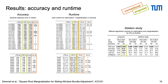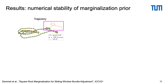Our ablation study demonstrates that only the combination of all proposed improvements leads to the best overall runtime and accuracy. Looking at the trajectory estimate for a EuRoC sequence, we see that the conventional approach in single precision diverges in the second half of the trajectory.